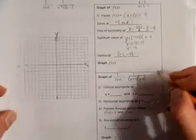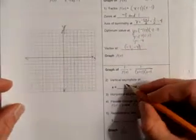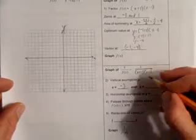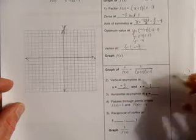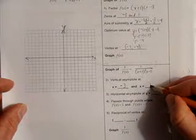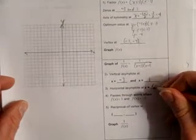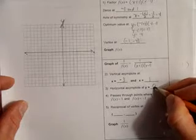Where there used to be zeros, there are now asymptotes. So there's an asymptote at negative 3, and another vertical asymptote at x equals 1. We know for reciprocal functions, there's always a horizontal asymptote at y equals 0.